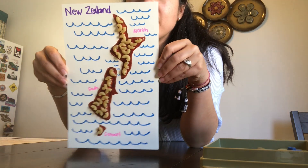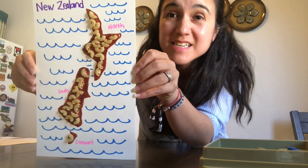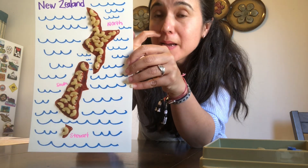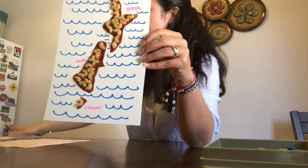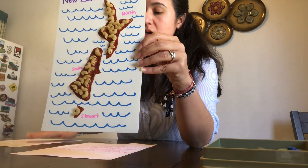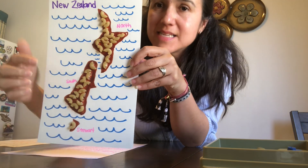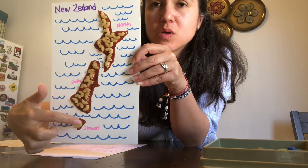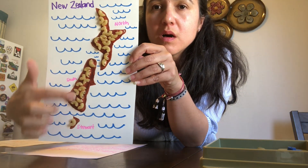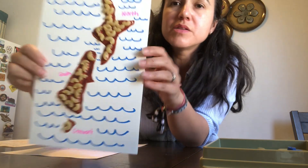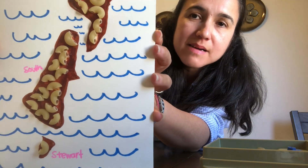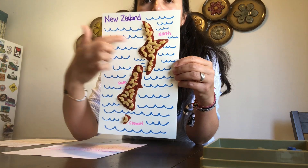An archipelago — this is the archipelago of New Zealand. New Zealand is an archipelago, and the three main islands are the north, the south, and this new one called Stuart. Can you see what I glued on the island, on the land? Pasta! And after that I just drew the waves. And this is my archipelago.